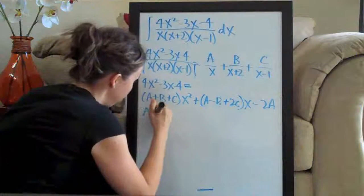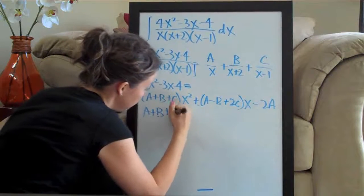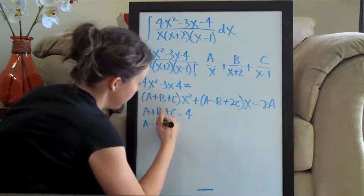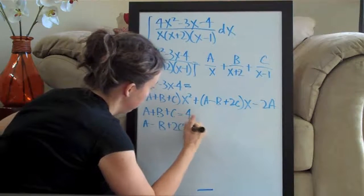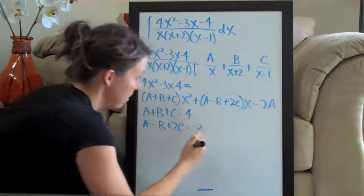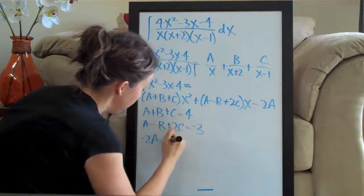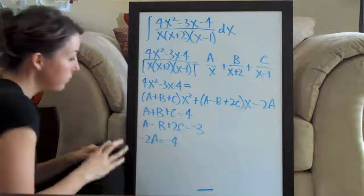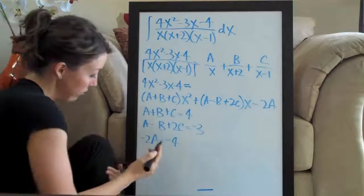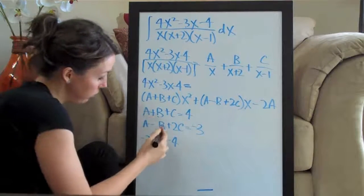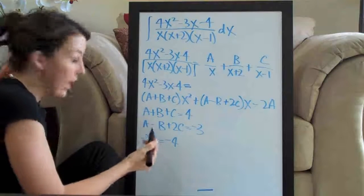So, we have a plus b plus c equals 4, a minus b plus 2c equals negative 3, and negative 2a equals negative 4. So now that we have these, we can solve, we can use them together to solve for a, b and c.